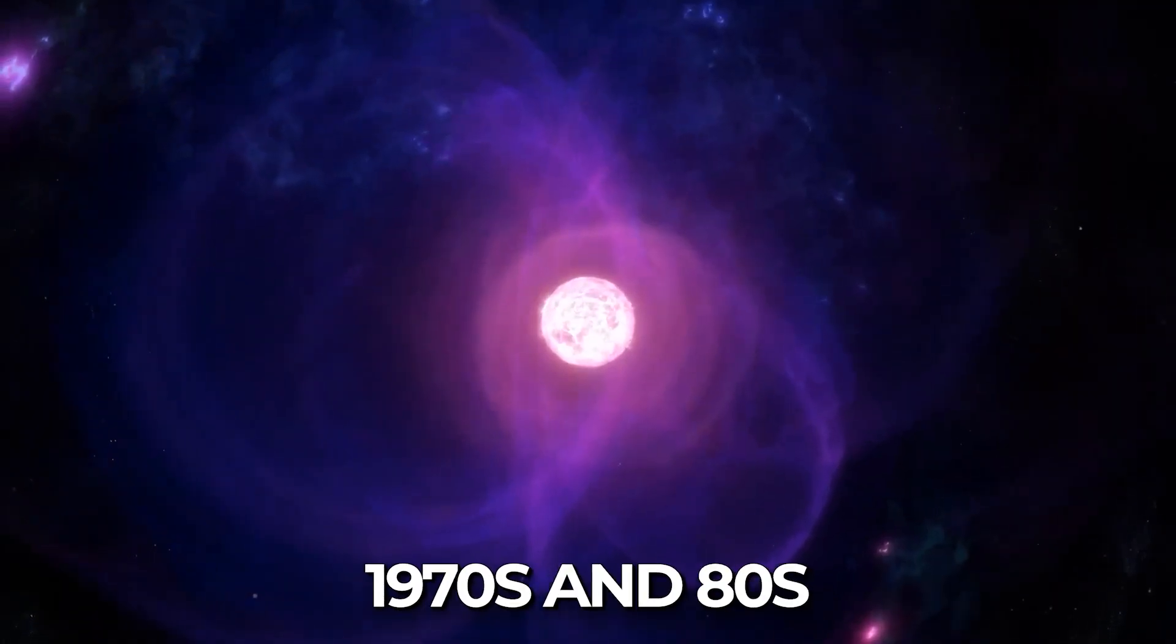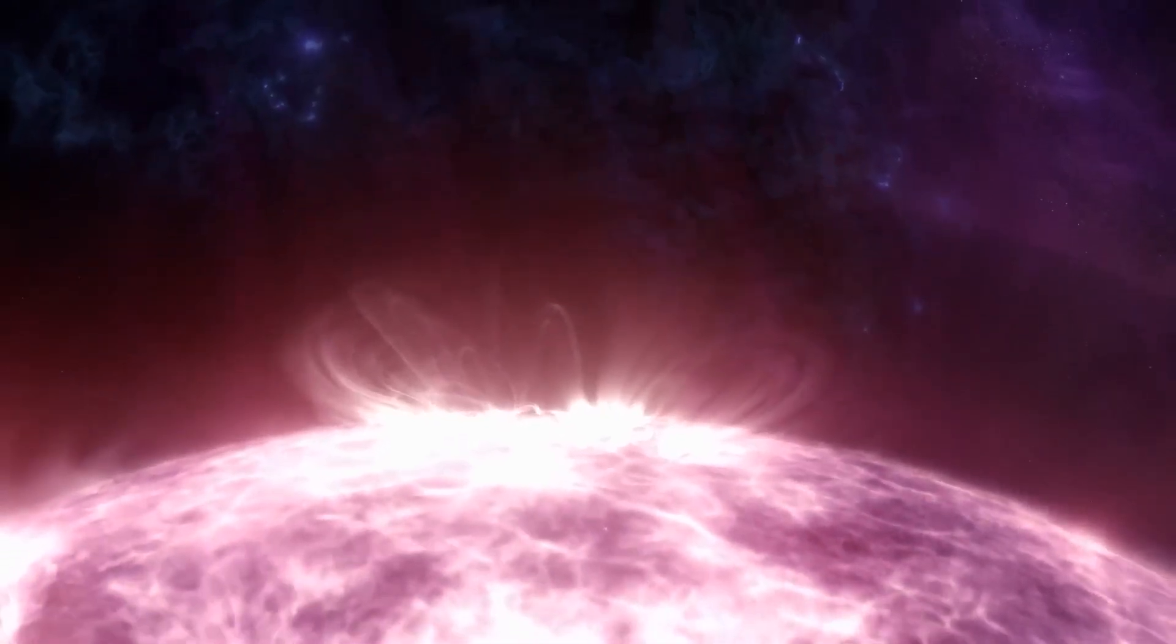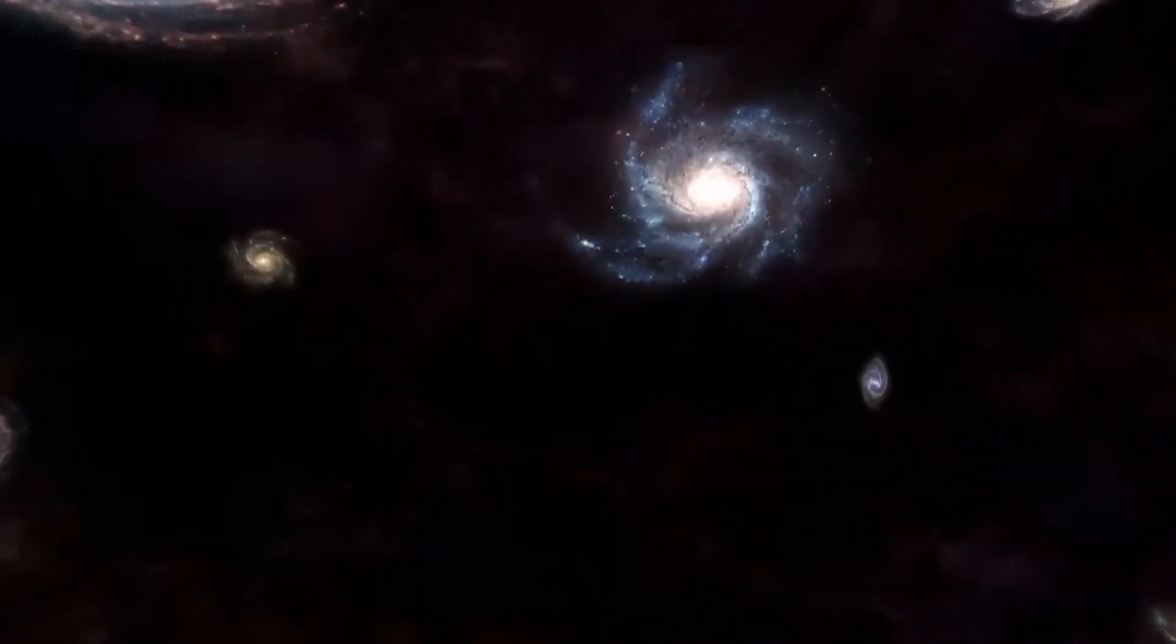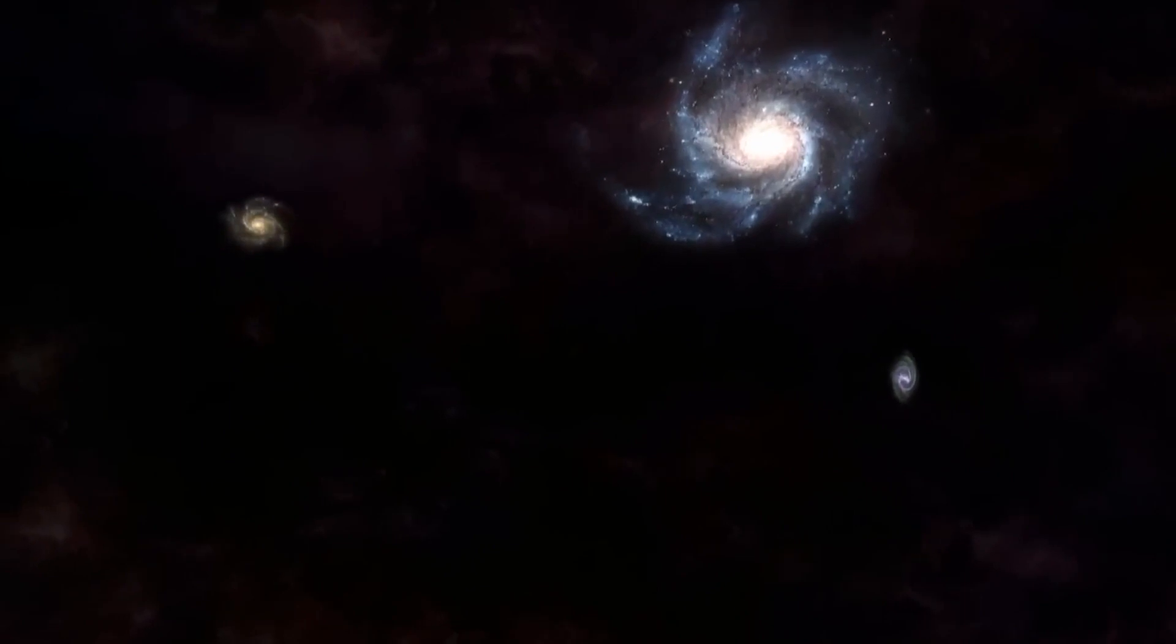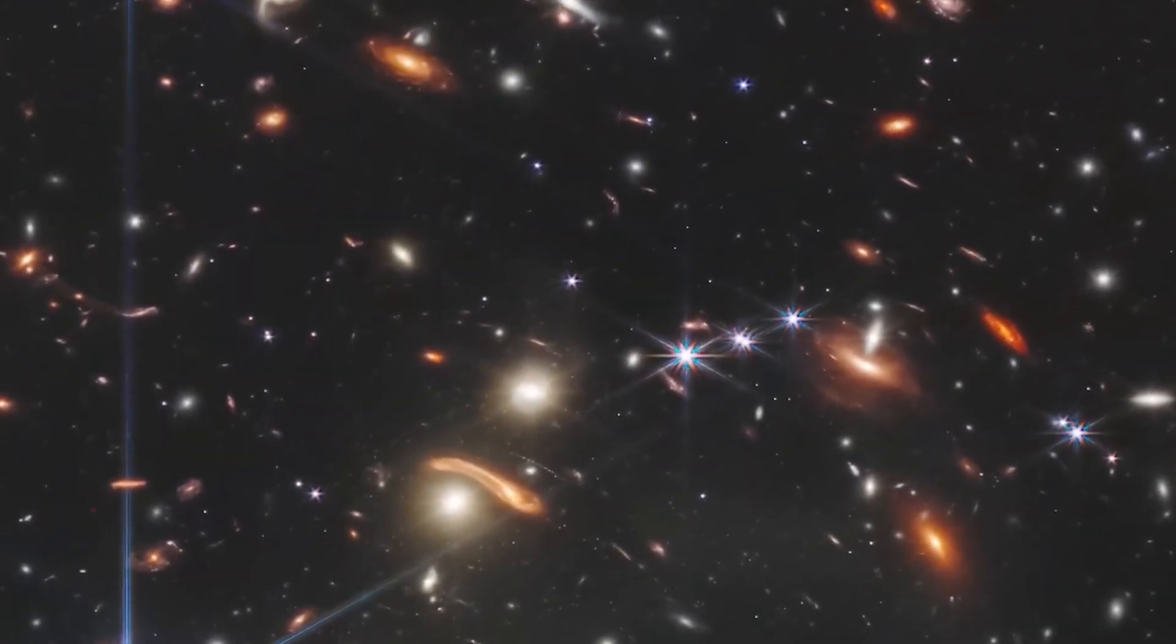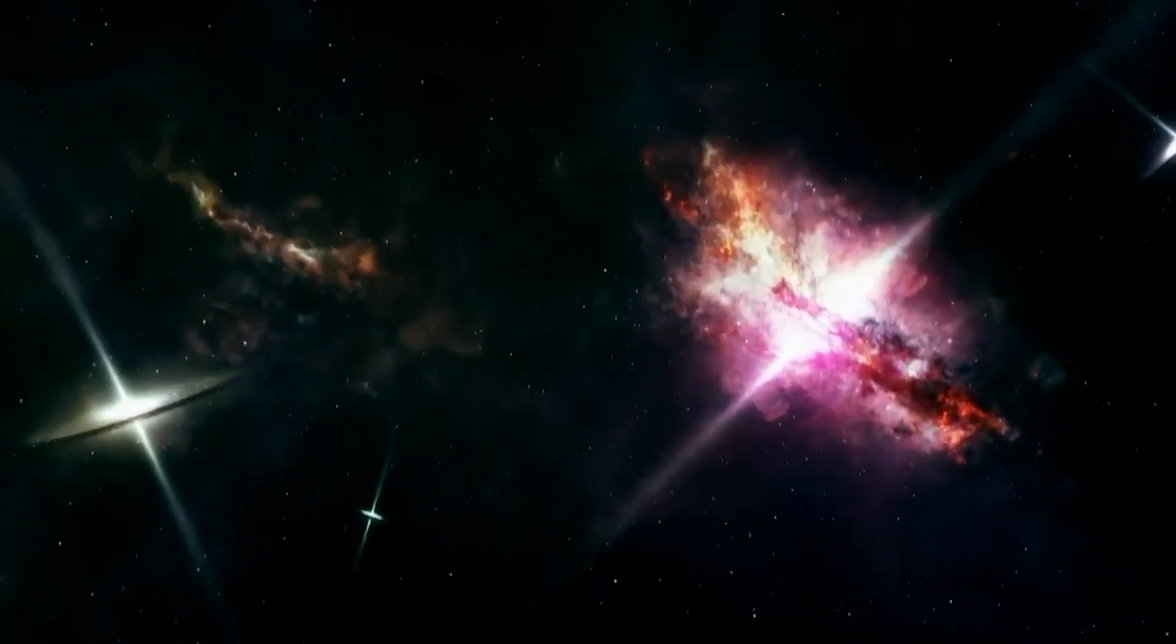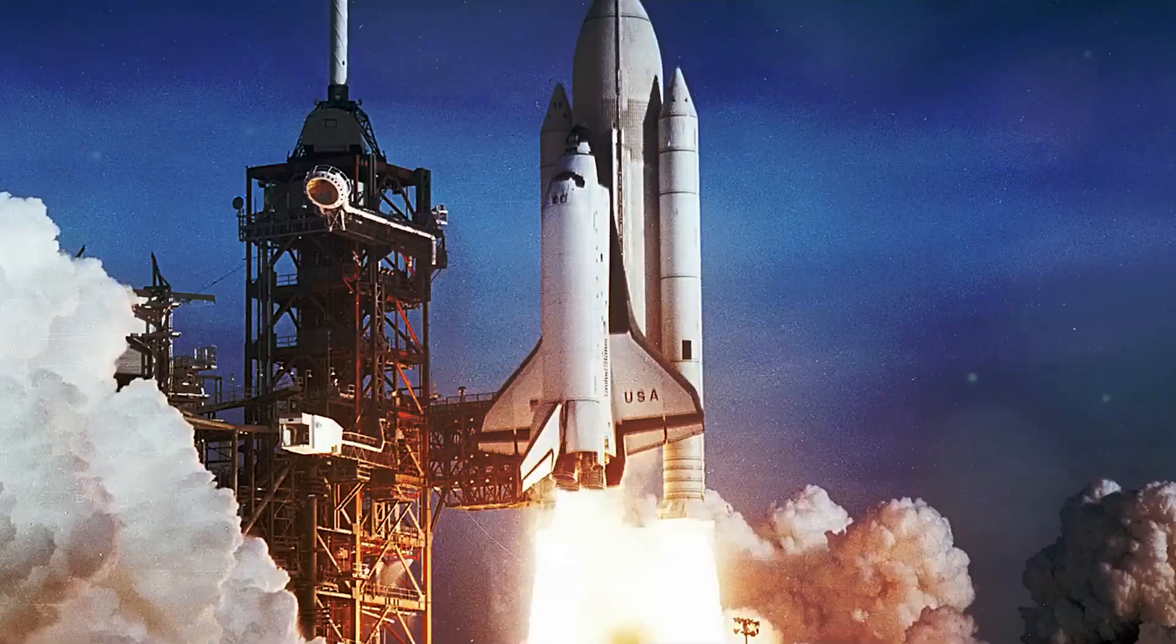In the 1970s and 80s, the study of redshifts, a method for measuring galaxy distances, unveiled the grand-scale structure of the universe. Galaxies weren't scattered randomly. Instead, they formed a web with vast voids between them.